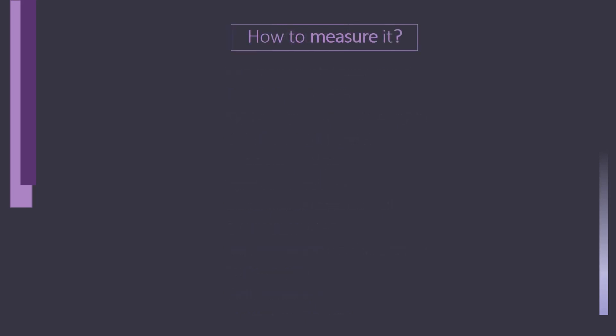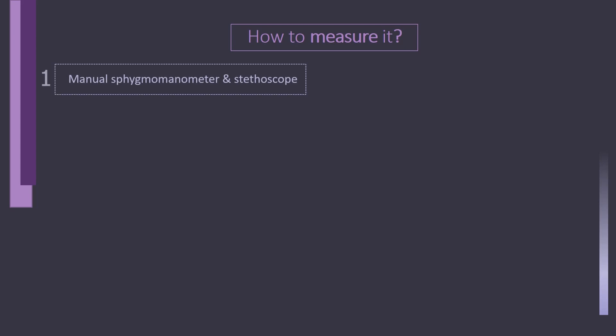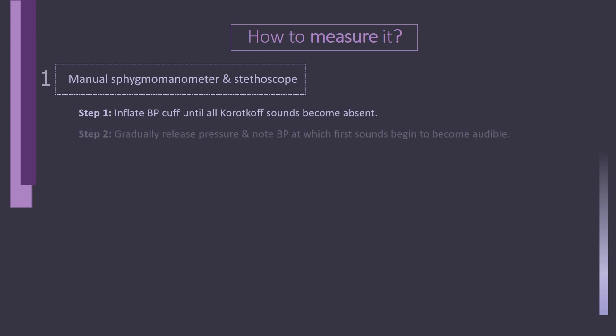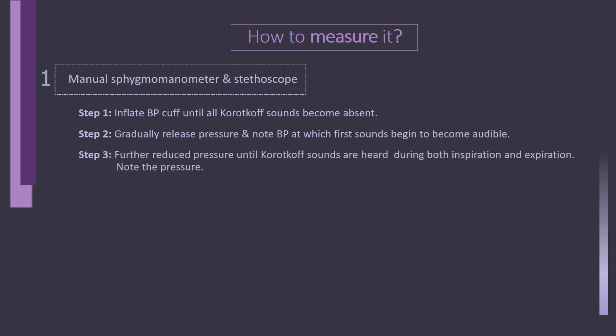How to measure pulsus paradoxus? Automated blood pressure cuffs cannot accurately measure for pulsus paradoxus. It is best measured manually with a manual sphygmomanometer and stethoscope. Assessment is made by inflating the cuff until all Korotkoff sounds are absent, then gradually releasing pressure. The first sounds auscultated will be heard only during expiration, and this pressure should be noted. Next, as the cuff pressure is further reduced, note the pressure when Korotkoff sounds are heard during both inspiration and expiration. The difference between these two measurements, if greater than 10 mmHg, indicates the presence of pulsus paradoxus.